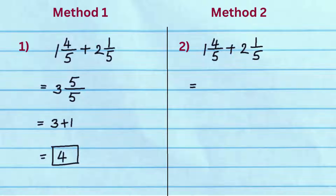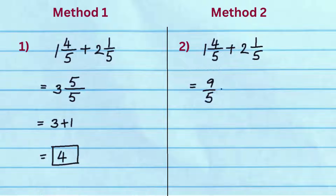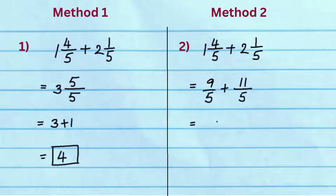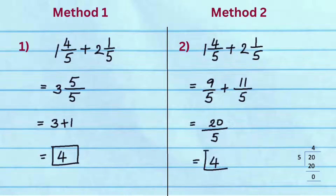In method 2, first convert the mixed fractions to improper fractions. 1 and 4 fifths will become 9 by 5, and 2 and 1 fifths will become 11 by 5. Add the numerators 9 and 11 to get 20, and keep the denominator 5 as is. Since 20 by 5 is an improper fraction, reduce it to get the answer 4.